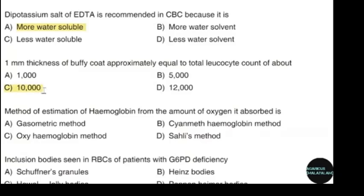Method of estimation of hemoglobin from the amount of oxygen it absorbs. Correct answer: option A — Gasometric method.